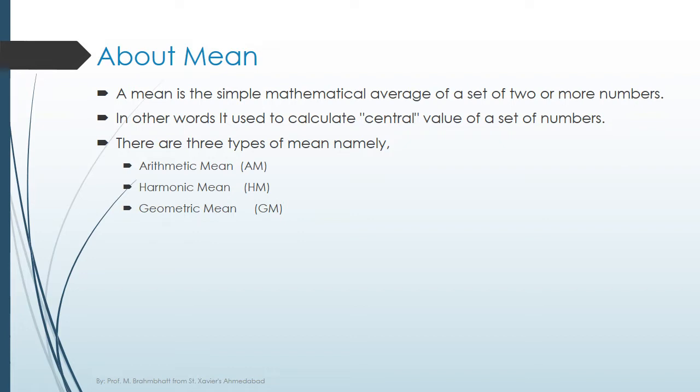There are basically three types of measures of central tendency: mean, median, and mode. Let's talk about mean first.